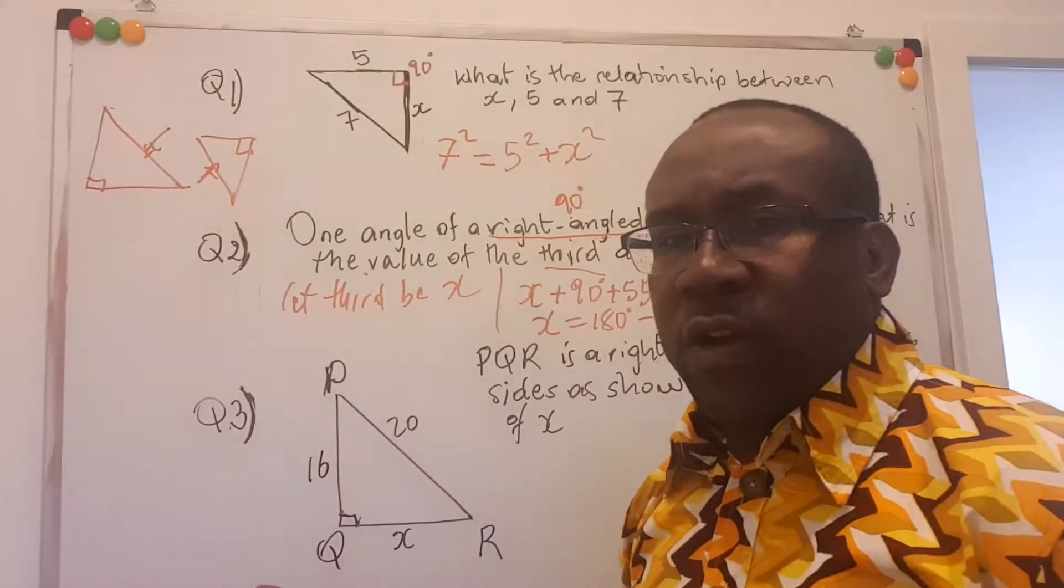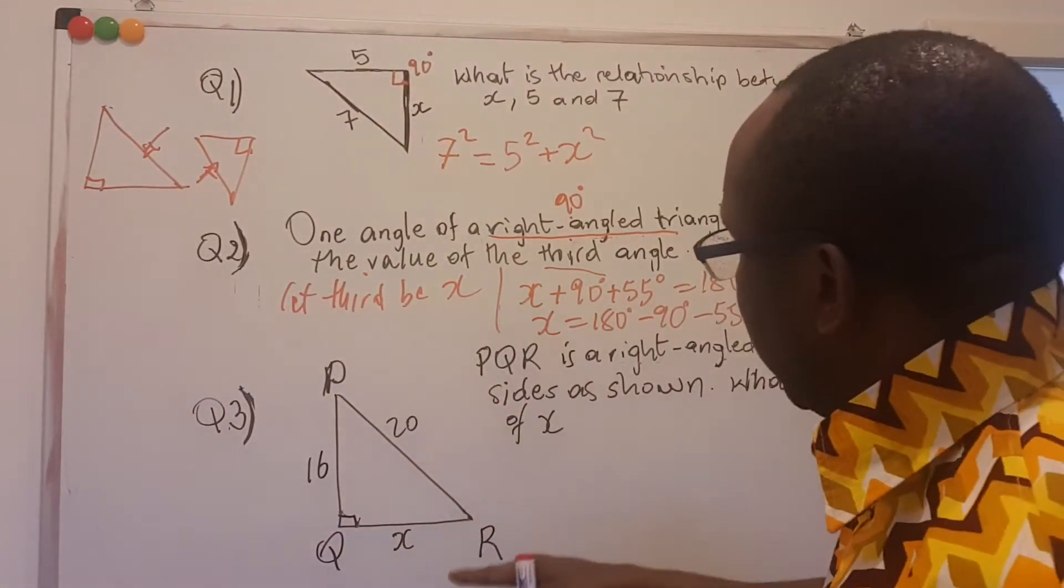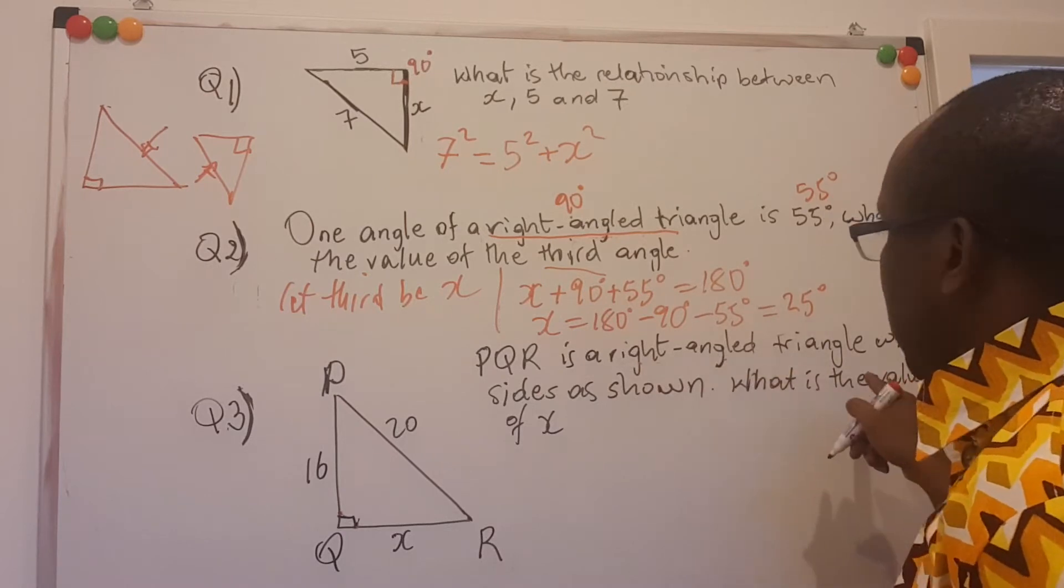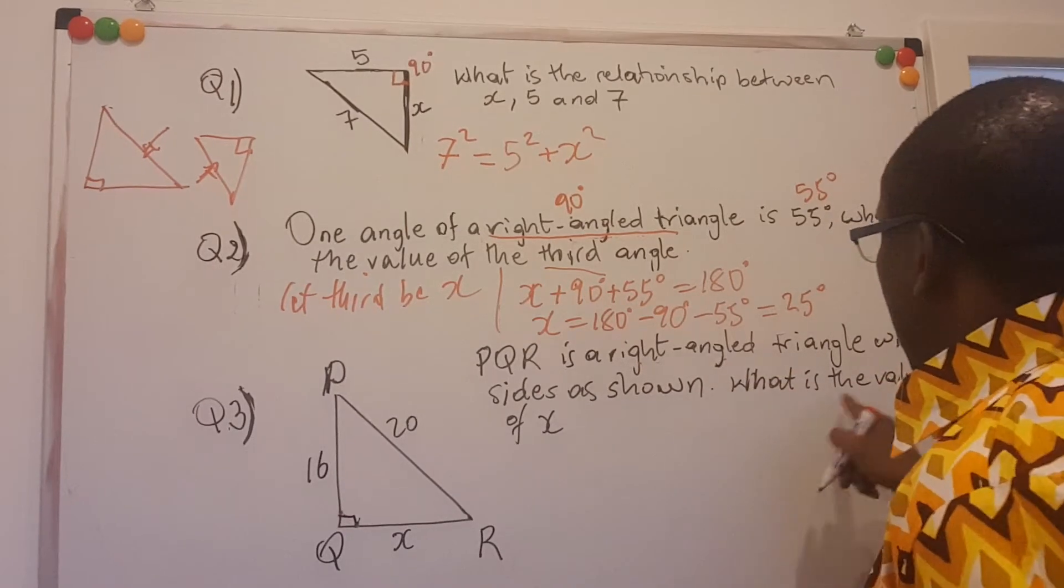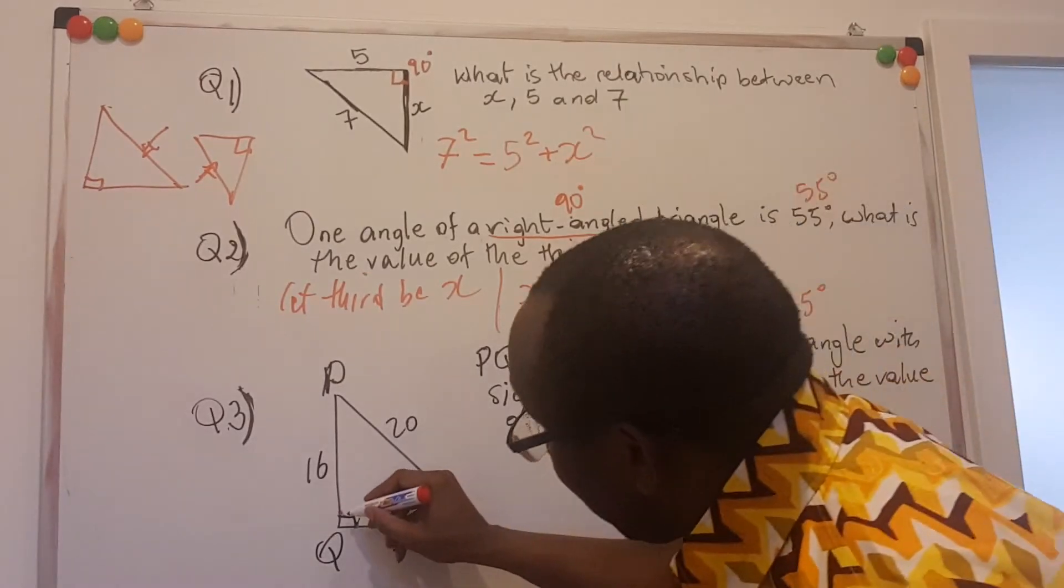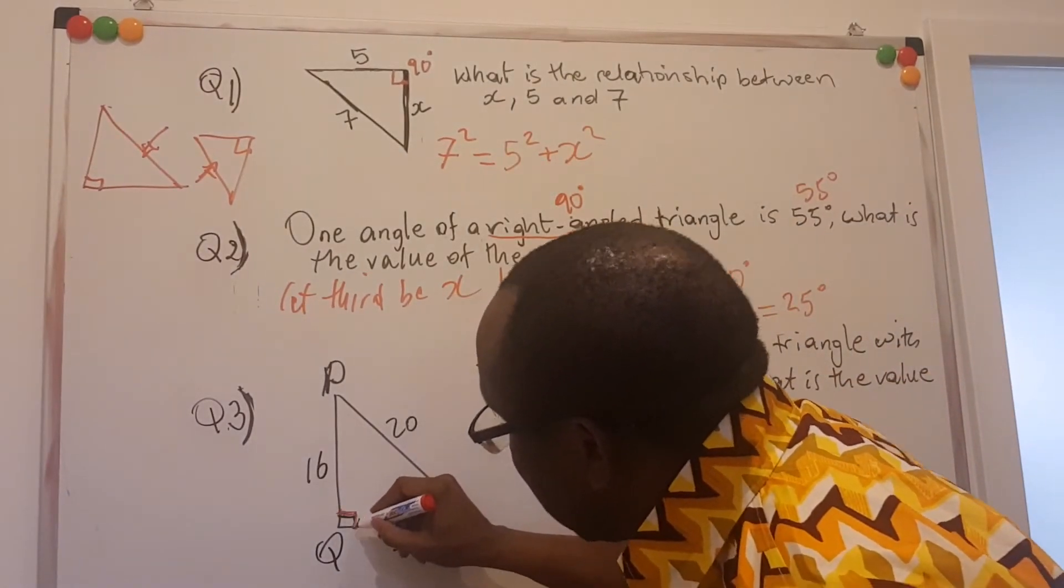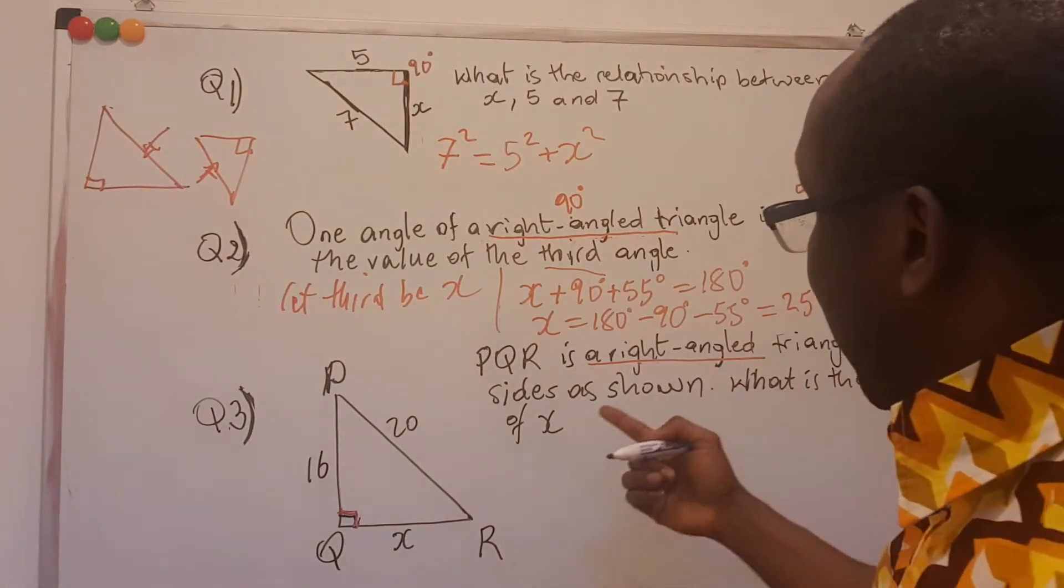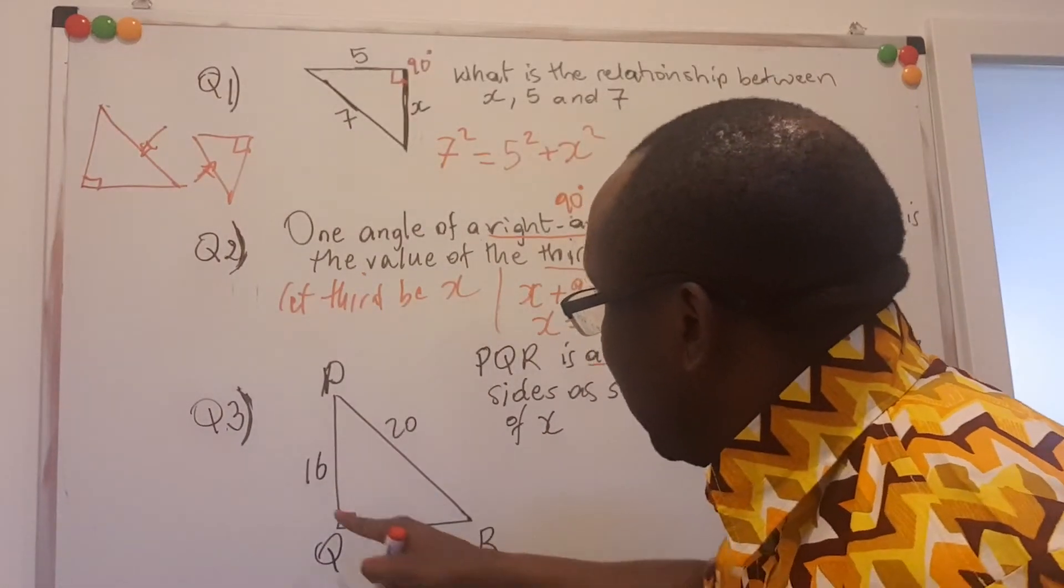The third one says, given this triangle here, PQR is a right angle triangle, which side has shown what is the value of x. Once again, we are told it's a right angle triangle, and they have also specified it again here. So it's given twice. The information is reiterated. So it means what do we do? We see the side information. They are all here.